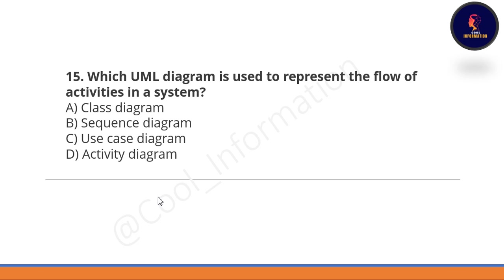Next question: which UML diagram is used to represent the flow of activities in a system? Activity diagram is used to represent the flow of activities in a system. Option D is correct.